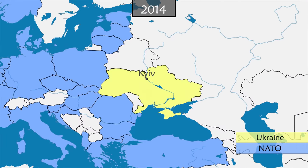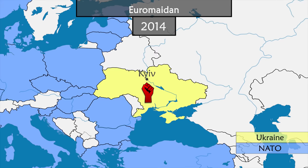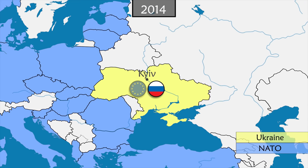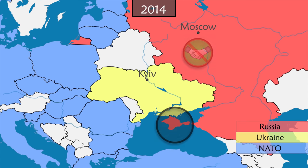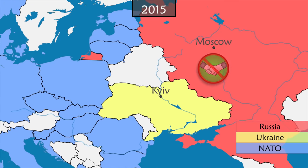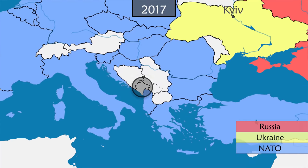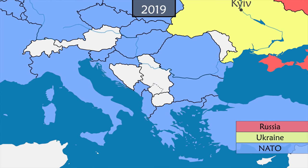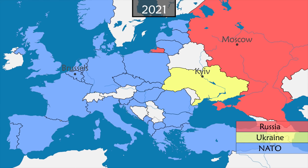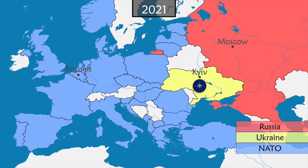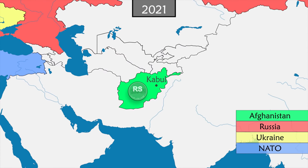In 2014, in Ukraine, pro-European demonstrations turn into a revolution; the pro-Russian government falls and the country is torn between pro-Russian and pro-European supporters. Russia takes advantage of the chaos to annex Crimea. In response, NATO suspends all cooperation with Russia and deploys troops in Estonia, Latvia, Lithuania, and Poland. In 2017, Montenegro joins the alliance, and in 2020, North Macedonia becomes the 30th member of NATO.